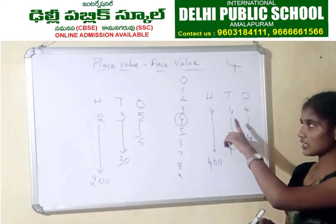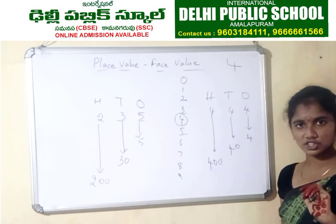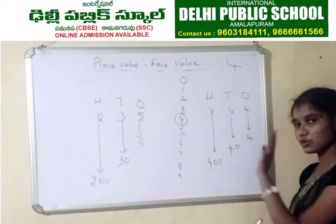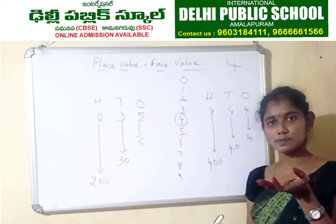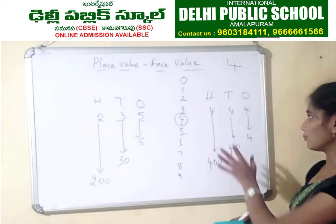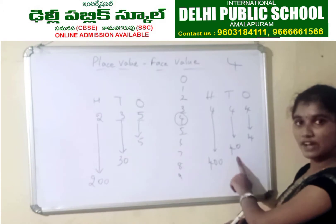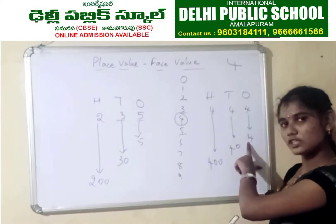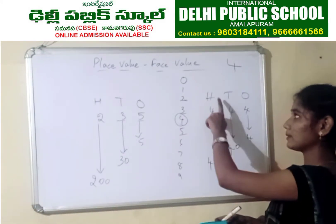See here — is 4 changing? Is the shape of 4 changing from place to place? No, it is not changing. But what is changing? The power is changing. Here it is only 4, and when it goes to 10's place it became 40, and when it goes to 100's place it became 400. Places have the power to change the value, but face value never changes. The face value of 4 is the same — only the place value is changing.